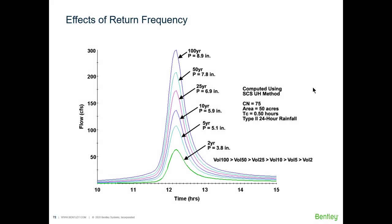To show the effect of changes on the synthetic SCS unit hydrograph, we ran an experiment with the same catchment — curve number 75, area 50 acres, time of concentration 0.5 hours — using the same synthetic rainfall distribution but different total rainfall depths: 2-year (3.8 inches), 5-year, 10-year, 25-year, up to 100-year. As expected, the volume for a larger depth of precipitation is greater than the volume for the 2-year storm.